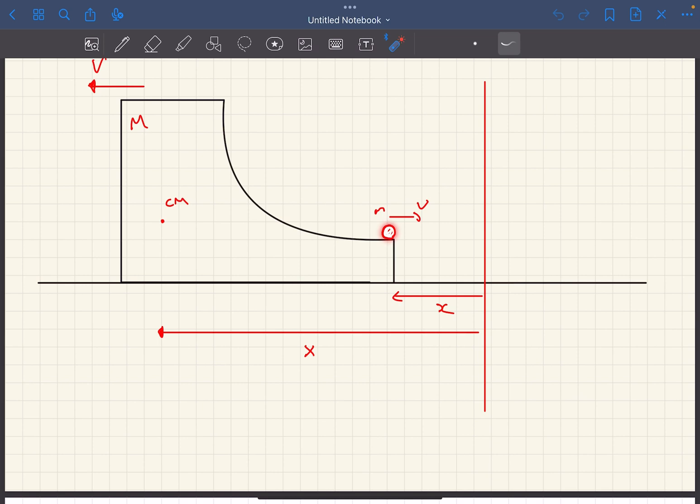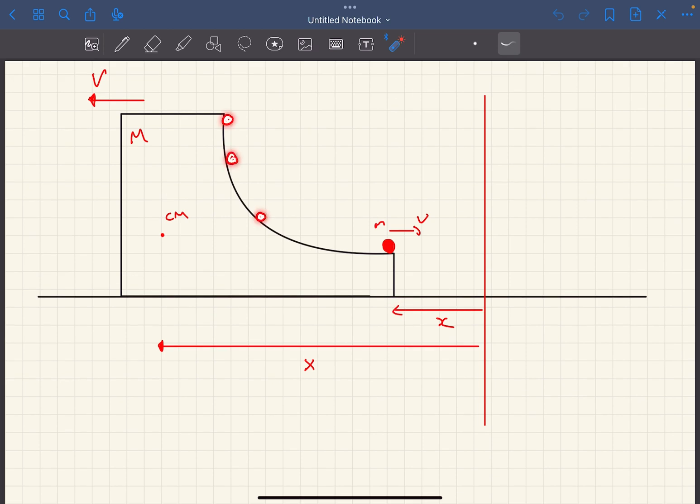When the mass m is about to lose contact with the block, its position x was given. Now, as the mass m continues to slide down the block, it continuously applies a normal force on the block, which means the block will have a displacement towards the left. And that displacement, let's say it is equal to x.